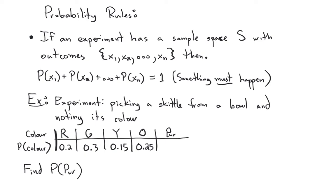The first rule basically says that one of the outcomes must happen. If you have a sample space with n different outcomes — for example, rolling a die has 6 outcomes, and picking a card from a deck has 52 outcomes — then the probabilities of all outcomes must add up to 1. Something must happen.